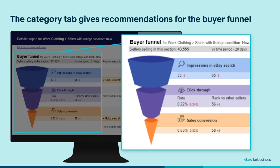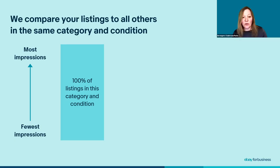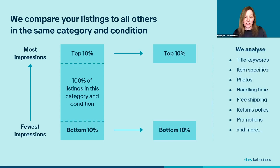So what do we do to generate our listing quality recommendations? Let's say you want to improve your impressions for work clothing shirts, condition new. We look at all eBay listings in this category and condition and rank them from highest to lowest in terms of impressions in search. Then we look within the top and bottom 10% of these results and analyze various factors, such as the number of keywords in each title, the number of item specifics or photos in each listing. You will then find recommendations to improve your listing quality based on those factors in each category tab.